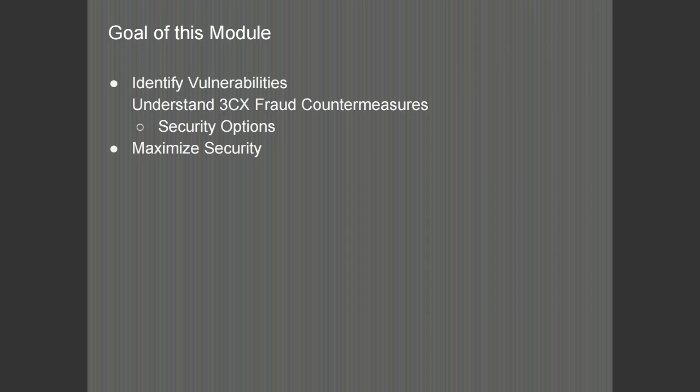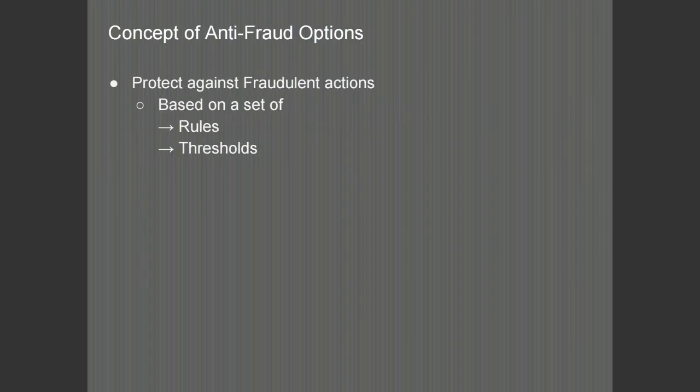In this module, we will see the vulnerabilities available as VoIP attacks and hacks, and we will see how 3CX will countermeasure these fraud attempts. We will see the various security options of the PBX, and we will talk about how to maximize the security of the PBX. We will see how the PBX will protect itself against fraudulent actions based on a set of rules and thresholds which can be configured in 3CX, how they interact with each other, how they are configured, and how they impact the performance of the PBX as well.